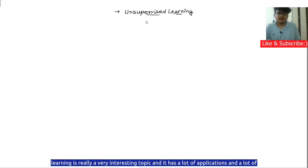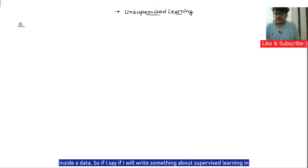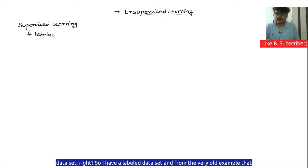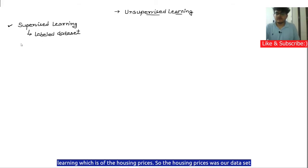Unsupervised learning is a very interesting topic and has a lot of applications. Many tech companies use unsupervised learning to find and understand patterns inside data. In supervised learning, we have a very important thing — a labeled dataset. For example, the housing prices dataset we have been using has area and price as labels.